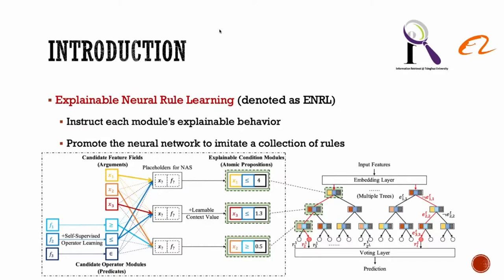The overall architecture of ENRL is illustrated in the figure. Explainable condition modules (ECM), the building bricks of rules, are on the left side. An ECM comprises a feature field as an argument, an operator module as a predicate, and a learnable context value as another argument to express an atomic proposition. On the right side, the resulting model is a multiple-tree neural network where each binary tree consists of ECMs as nodes. A path from the root node to a leaf node is a rule. Finally, we design a voting mechanism for all satisfied rules to collaboratively determine the prediction.